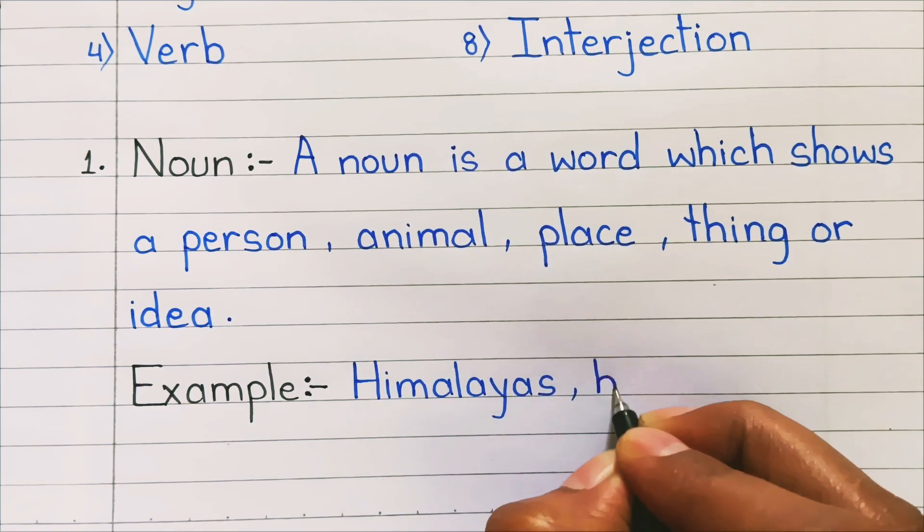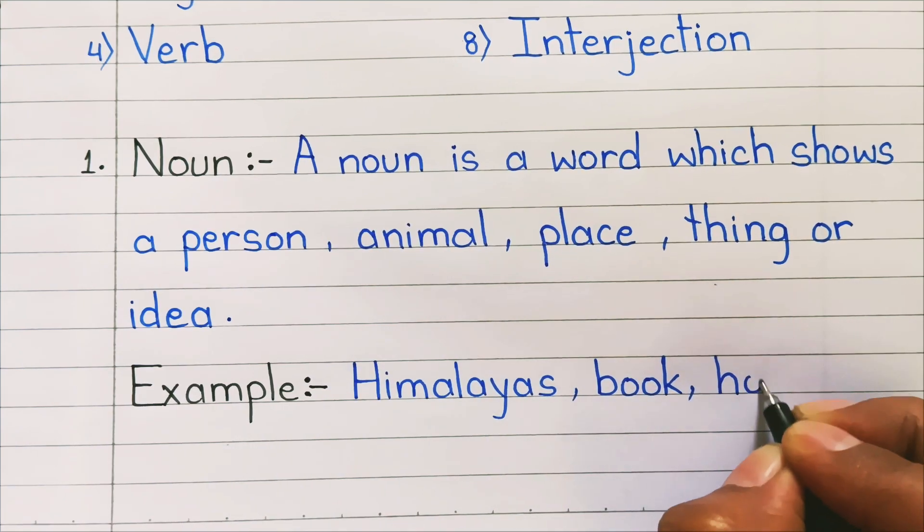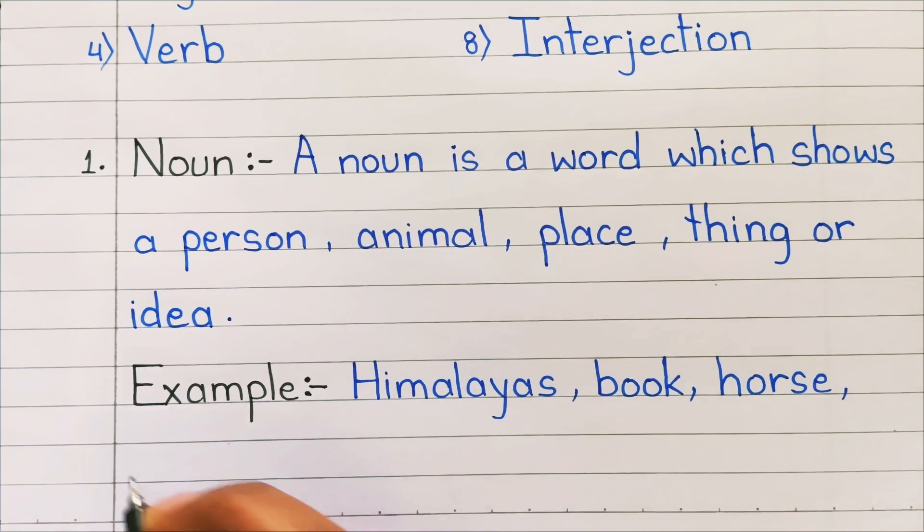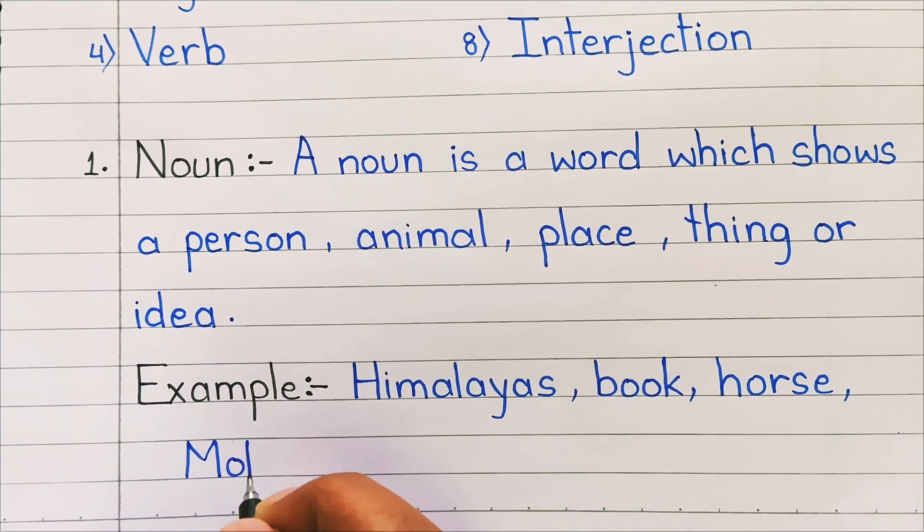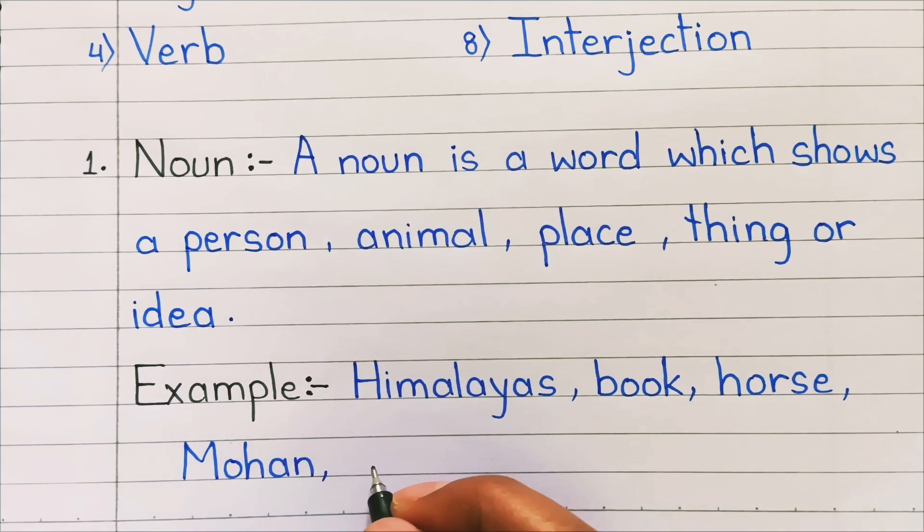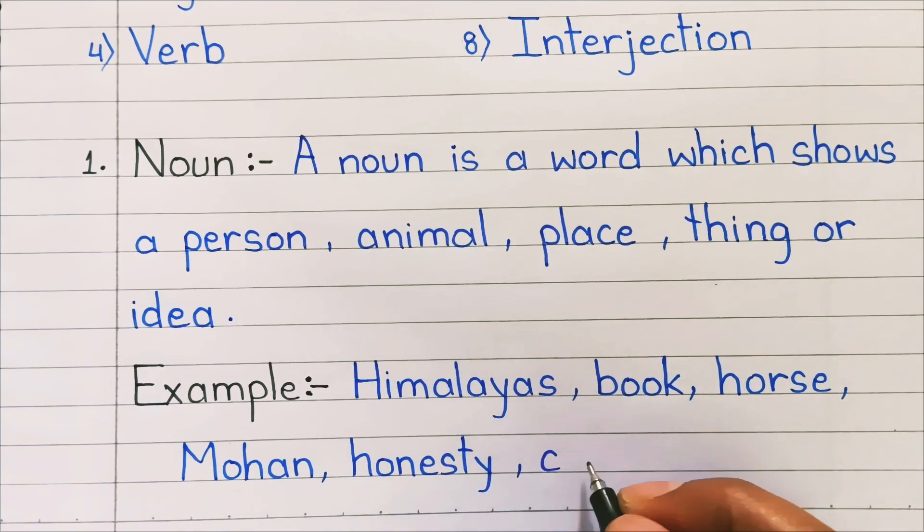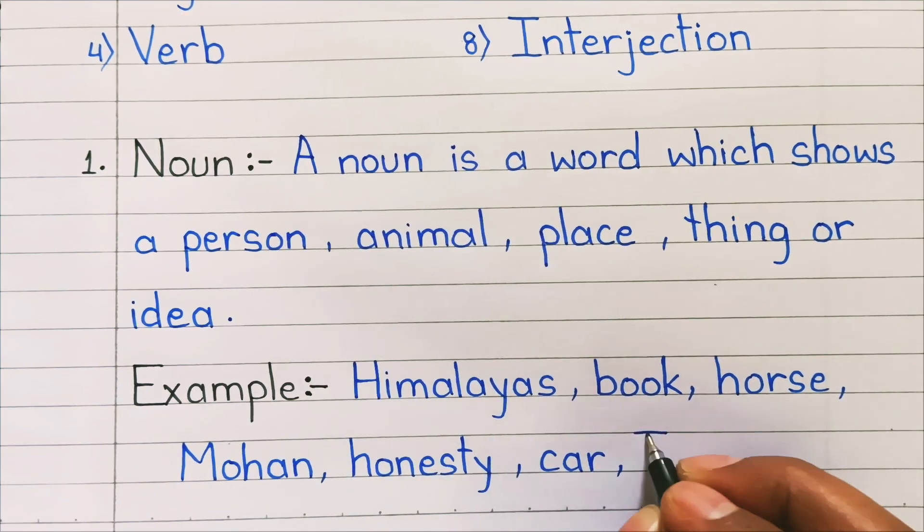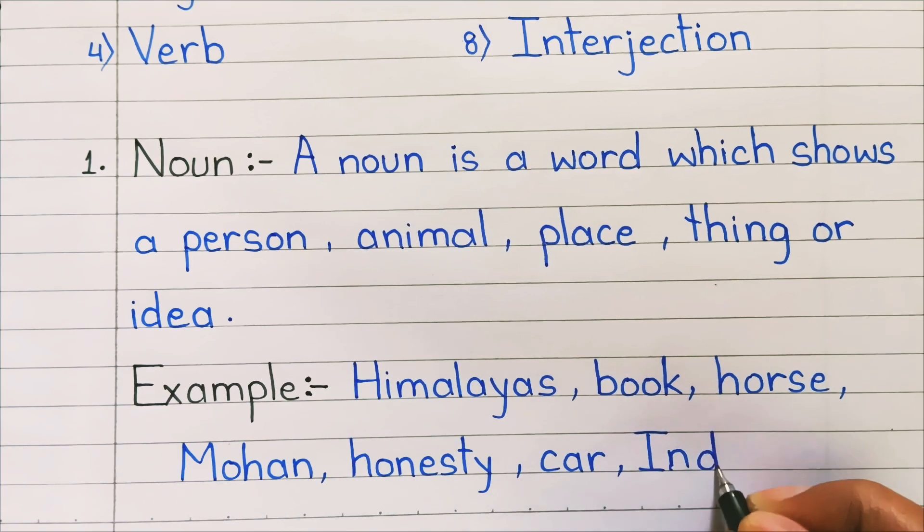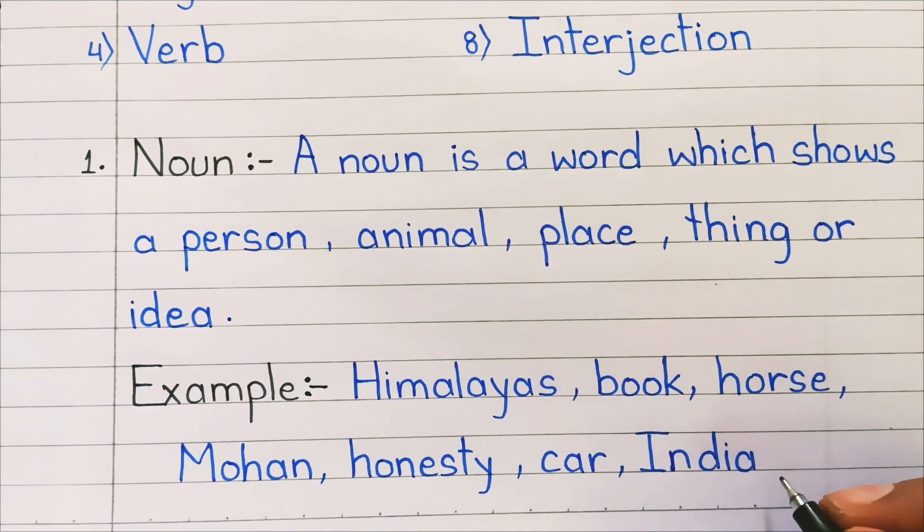1. Noun: A noun is a word which shows a person, animal, place, thing, or idea. Examples: Himalayas, book, horse, Mohan, honest, car, India, etc.